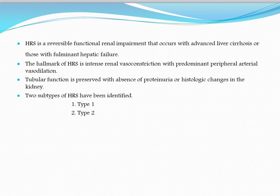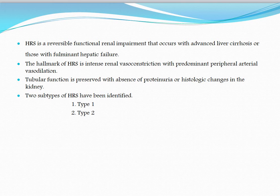HRS is a reversible functional impairment of the kidneys that occurs with advanced liver cirrhosis or acute permanent hepatic failure. The hallmark of HRS is intense renal vasoconstriction with predominant peripheral arterial vasodilation. Tubular function is preserved with absence of proteinuria or histologic changes in the kidney — hence if you do a kidney biopsy in these patients, you will not find anything.